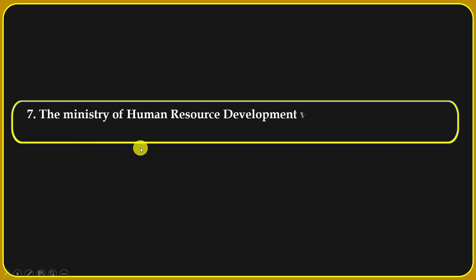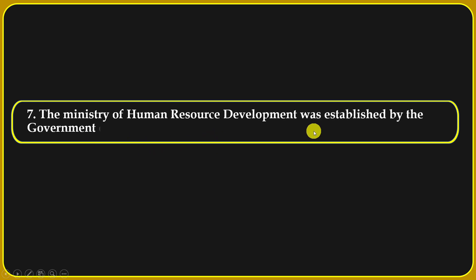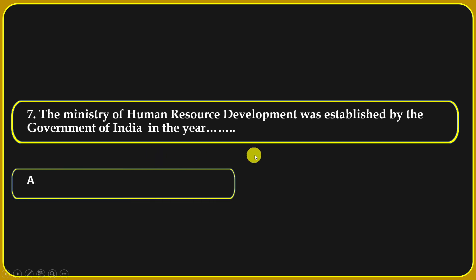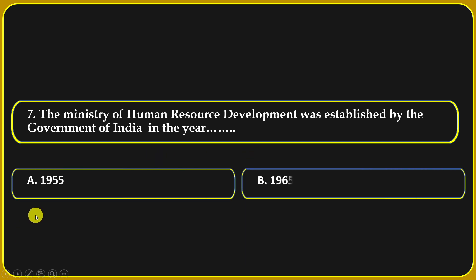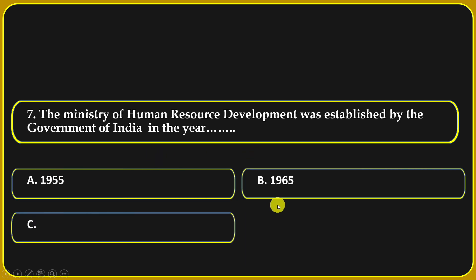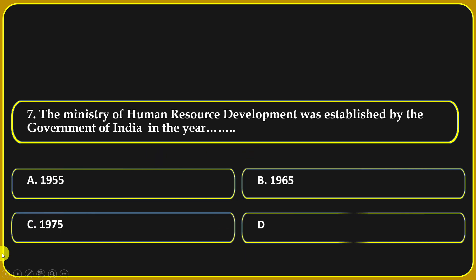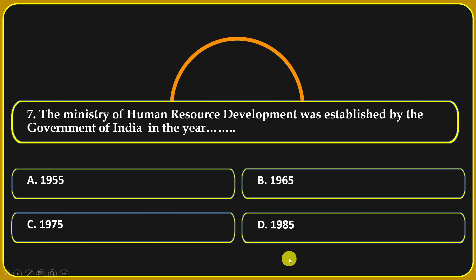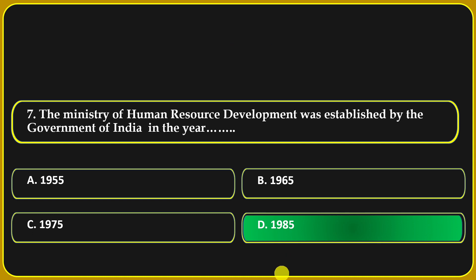The Ministry of Human Resource Development was established by the Government of India in the year: 1955, 1965, 1975, or 1985. The correct answer is 1985.